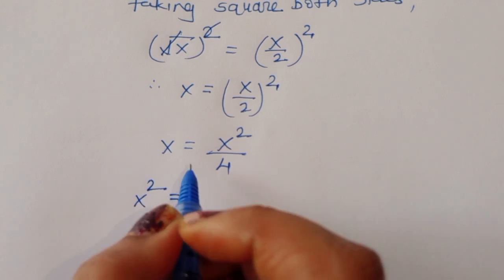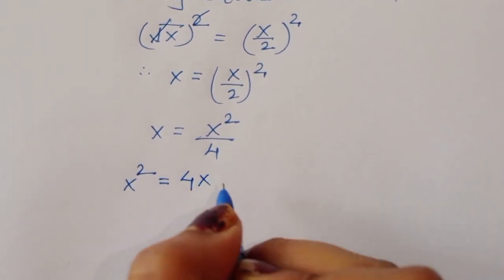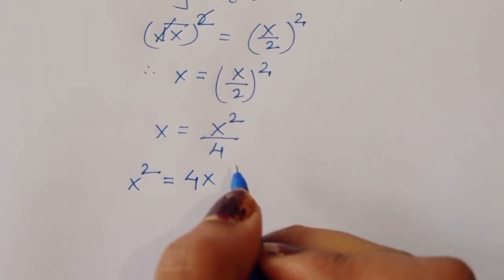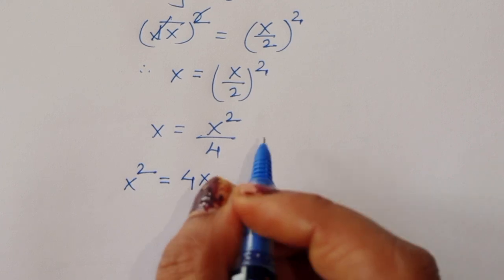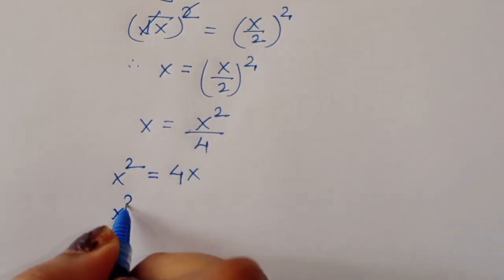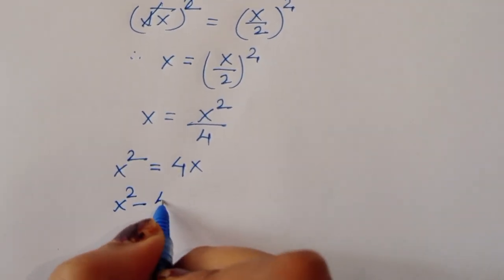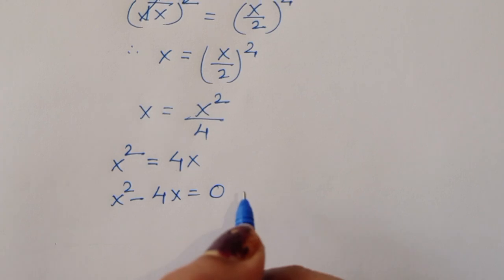By cross multiplication, x squared is equal to 4x. Now we can rearrange this to get x squared minus 4x is equal to 0.